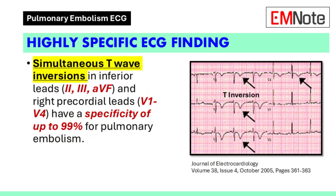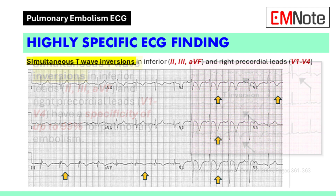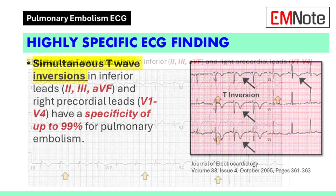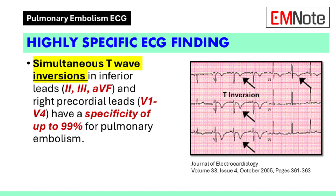One of the most specific findings for pulmonary embolism is the simultaneous presence of T-wave inversions in the inferior leads 2, 3, and AVF, and the right precordial leads V1 through V4. One study reported a specificity of up to 99% for this finding in the context of pulmonary embolism.